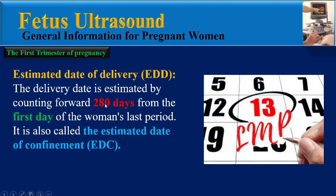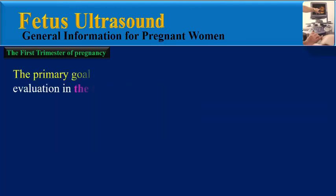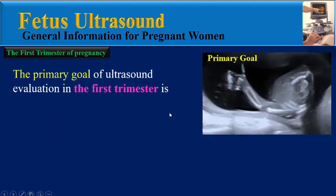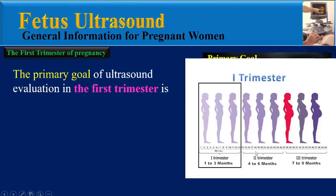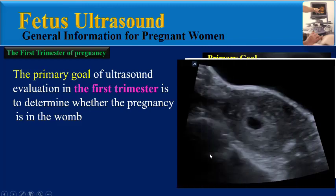Estimated date of delivery: the delivery date is estimated by counting 280 days from the first day of the woman's last period. It is also called the estimated date of confinement. The primary goal of ultrasound evaluation in the first trimester is to determine whether the pregnancy is in the womb or not.